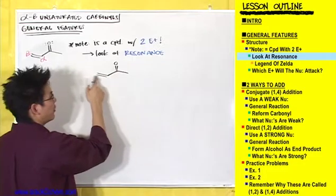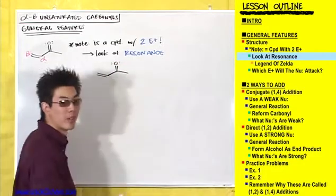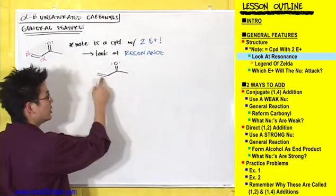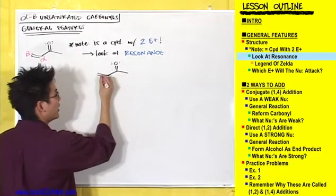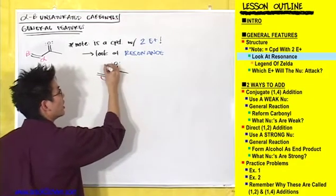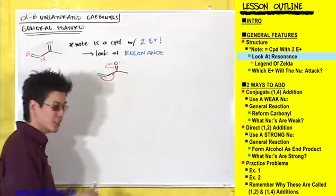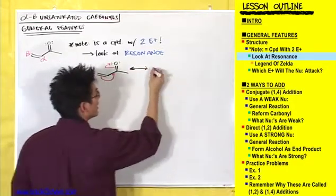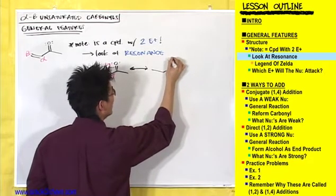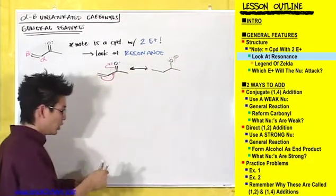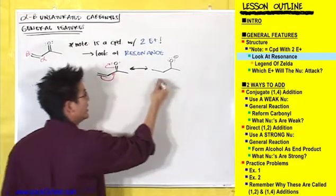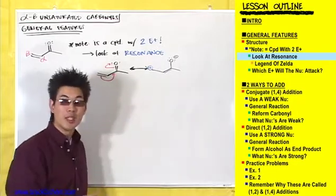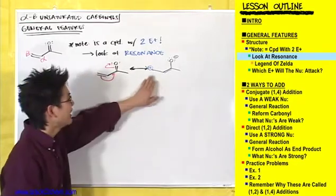Here's the alpha-beta unsaturated carbonyl compound. But this guy has resonance structures because you can use these two electrons in this double bond, shift that over, kick the electrons up to the oxygen, and check out what this reveals. This is going to put a negative charge on the oxygen, but look what happens when you shift this double bond over to here. That is going to put a positive charge on that carbon, revealing the second electrophile.